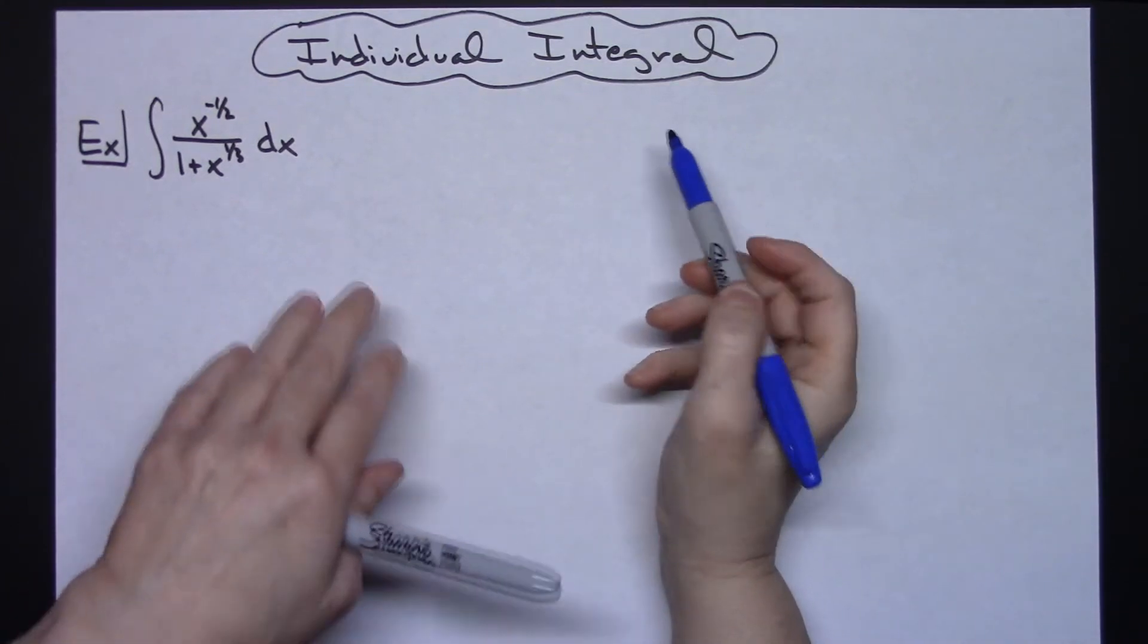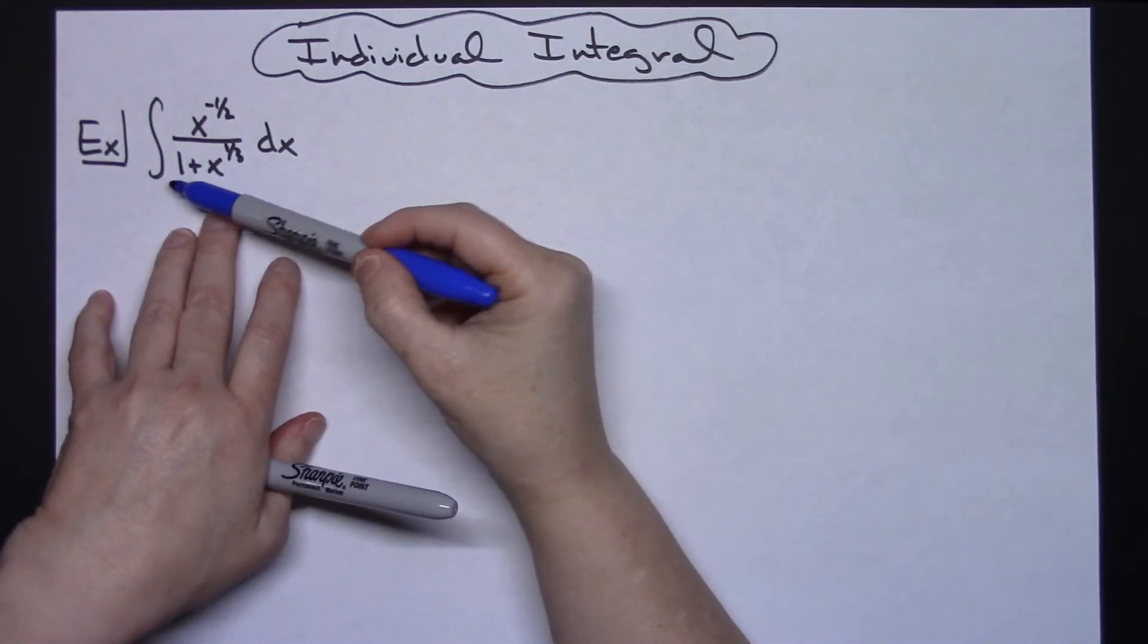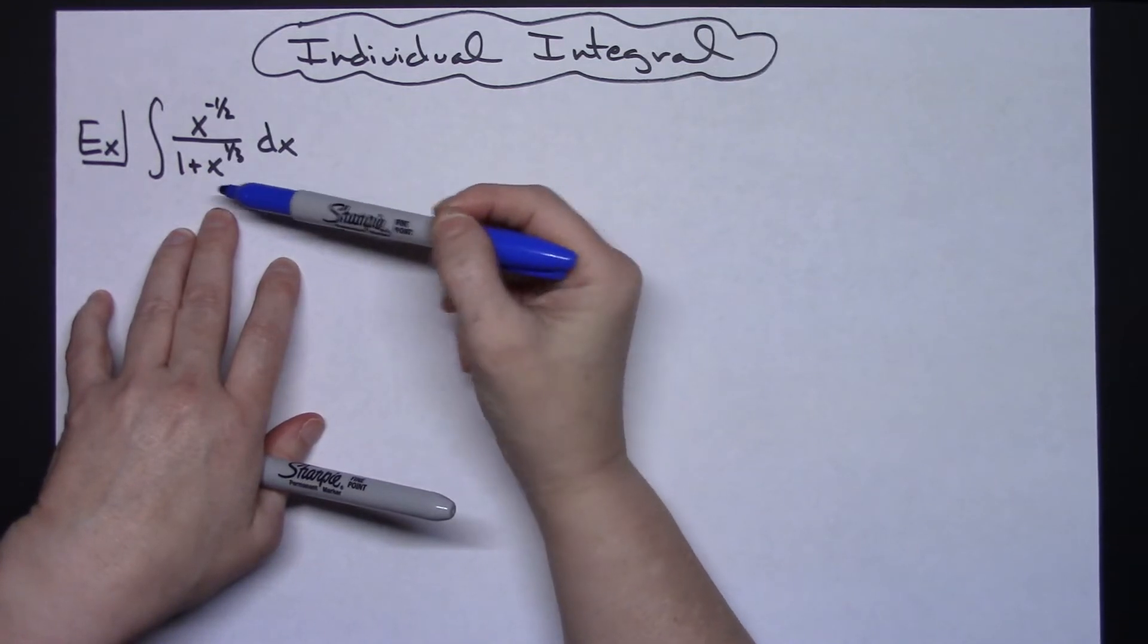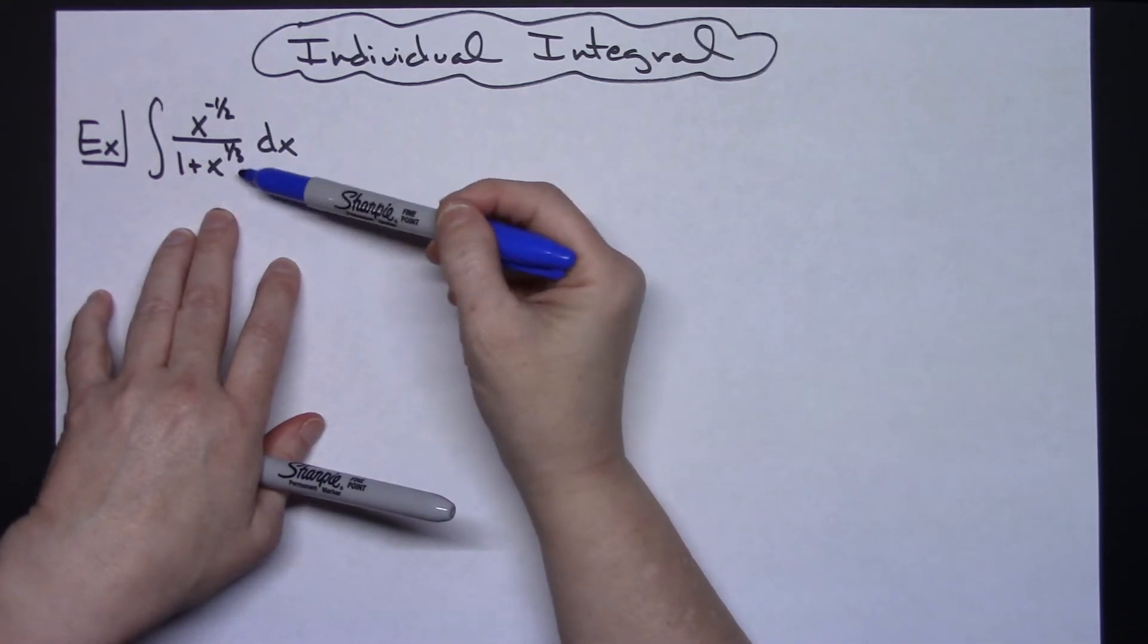In this video I'm going to be working out an individual integral. We're going to be taking a look at the integral of x raised to the negative one-half over 1 plus x to the one-third dx.